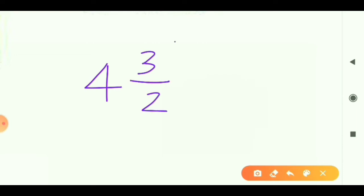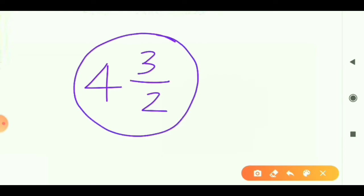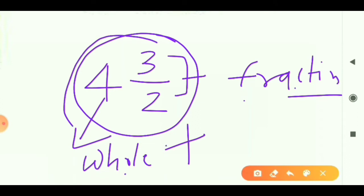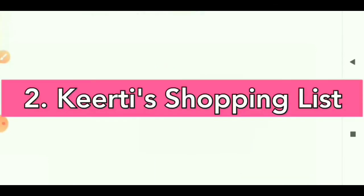Now, what is the definition of a mixed fraction? Here, 4 is a whole number and 3 upon 2 is a fraction number. A mixed fraction means a whole number and a fraction number together make a mixed fraction. When you solve this, you get an improper fraction. To convert, multiply the whole number with the denominator — 4 times 2 is 8 — then add the numerator: 8 plus 3 equals 11, so the answer is 11 upon 2.